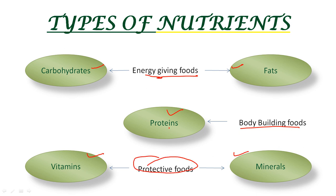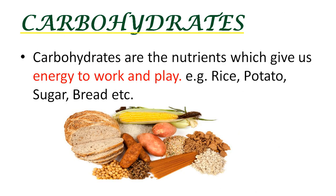These foods activate growth and resistance to various types of diseases. Now we will learn about these components of food in detail: carbohydrates, fats, proteins, vitamins and minerals. Carbohydrates provide energy to our body. The energy we get from carbohydrates helps us to do work and play. There are two different types of carbohydrates.